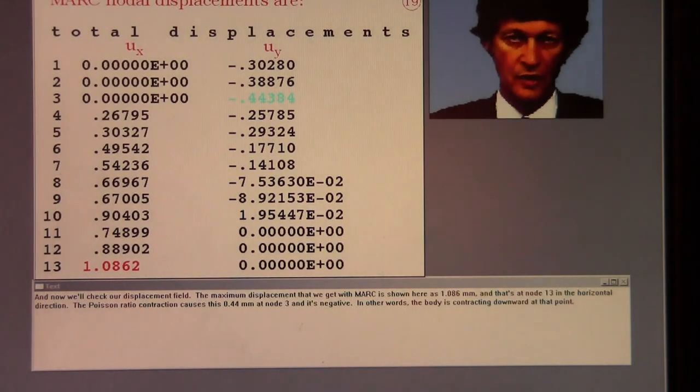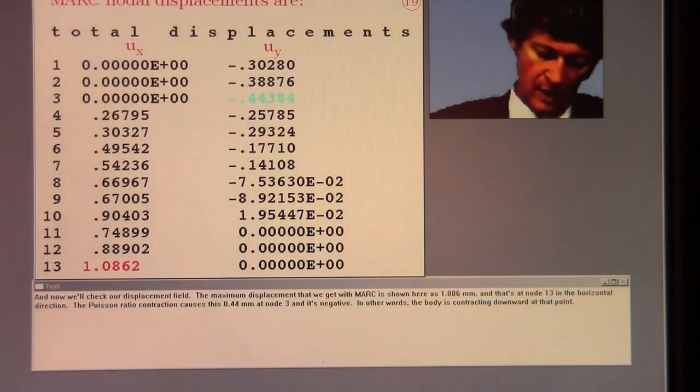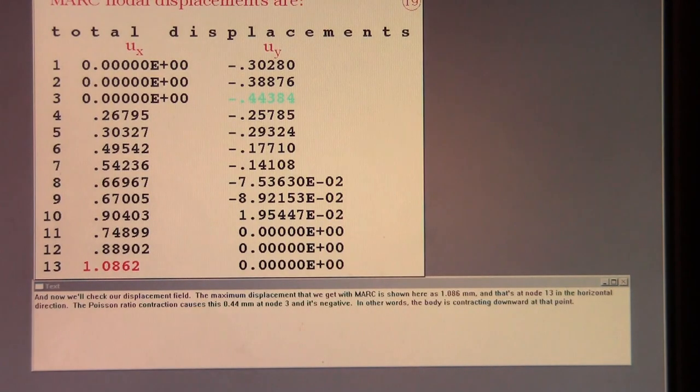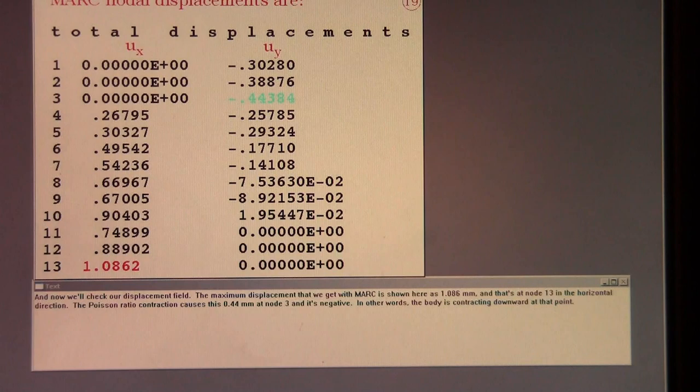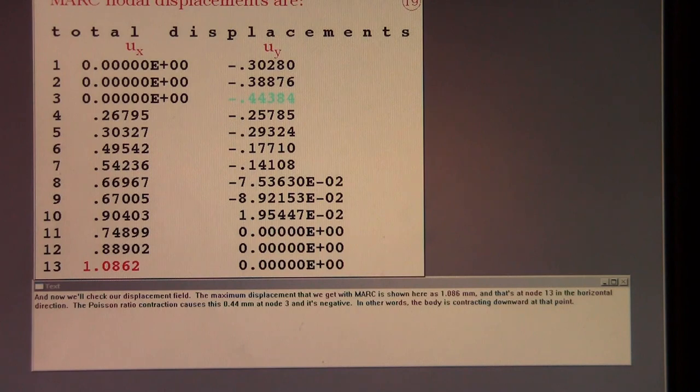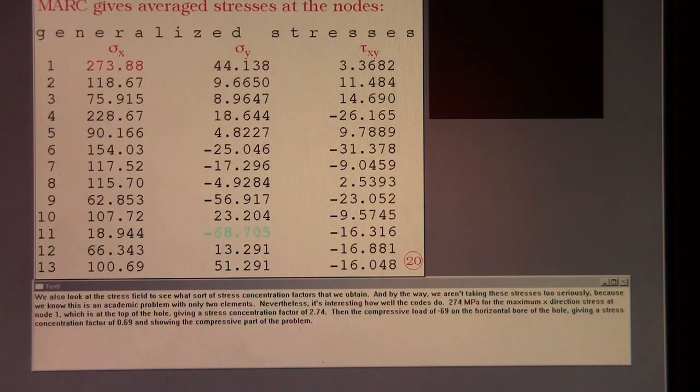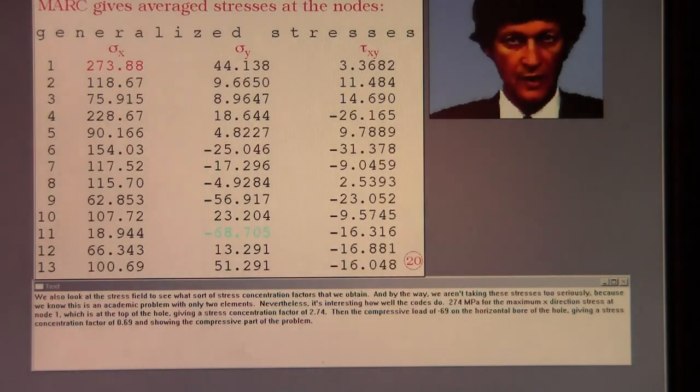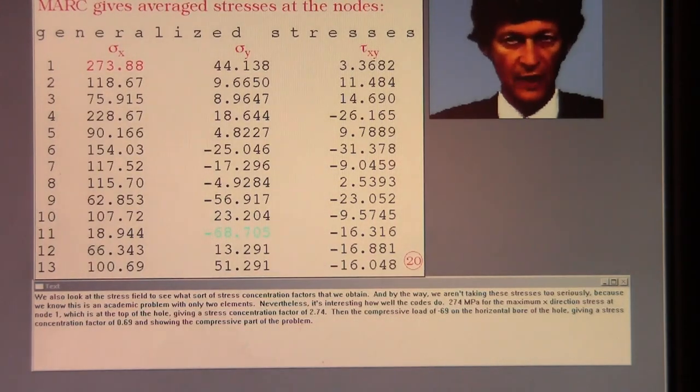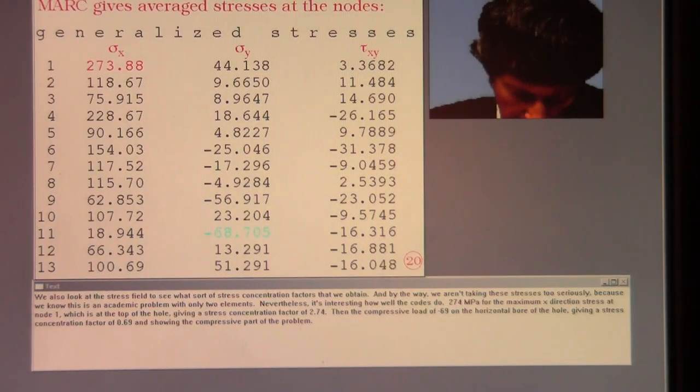And now we'll check our displacement field. The maximum displacement that we get with MARC is shown here is 1.086 millimeters. And that's at node 13 in the horizontal direction. The Poisson ratio contraction causes this .44 millimeters at node 3 and it's negative. In other words, the body is contracting downward at that point. We also look at the stress field to see what sort of stress concentration factors that we obtain.